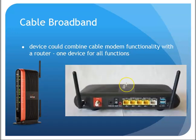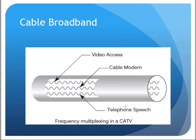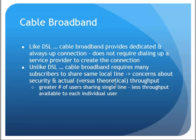The coax cable typically serves multiple functions — data and video for most people, and some still have phone service on top, though many just use their cell phone instead. Like DSL, cable broadband provides a dedicated, always-up connection — you don't have to dial in like with old dial-up internet service.